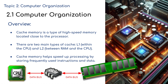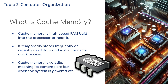Cache memory is high-speed RAM built into the processor or near to it. It temporarily stores frequently or recently used data and instructions for quick access. Cache memory is volatile, which means when we turn the computer off, all the information in cache or in RAM is lost.